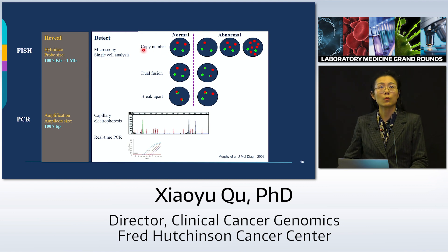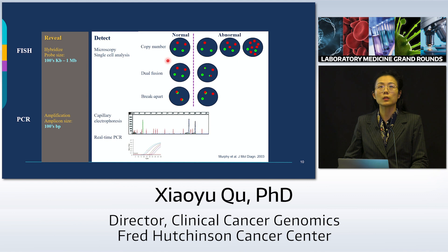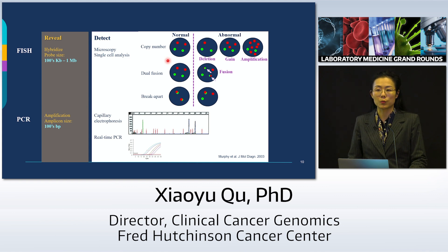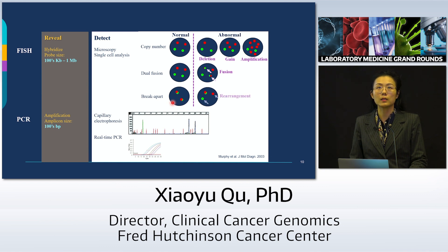In FISH, we use microscopy — largely human eyes looking at each individual cell. The three major types of FISH probes are: copy number probes for straightforward counting of signals indicating deletion, gain, or amplification; dual fusion probes for when we know both fusion partners and fusion signals signify abnormality; and break-apart FISH for genomic loci known to rearrange with many partners — such as MYC, RUNX1, or KMT2A — where probe separation calls a rearrangement.